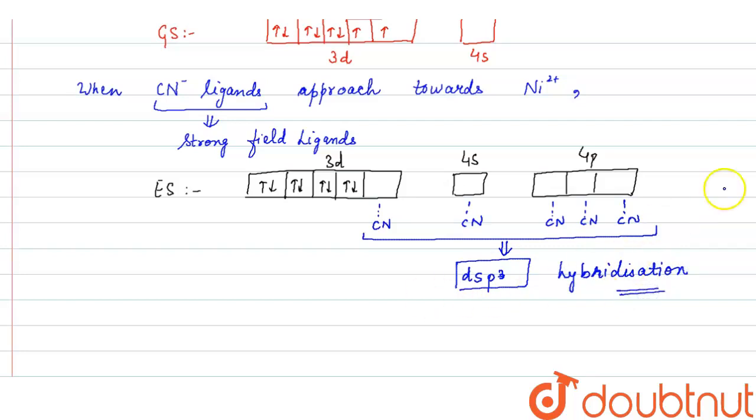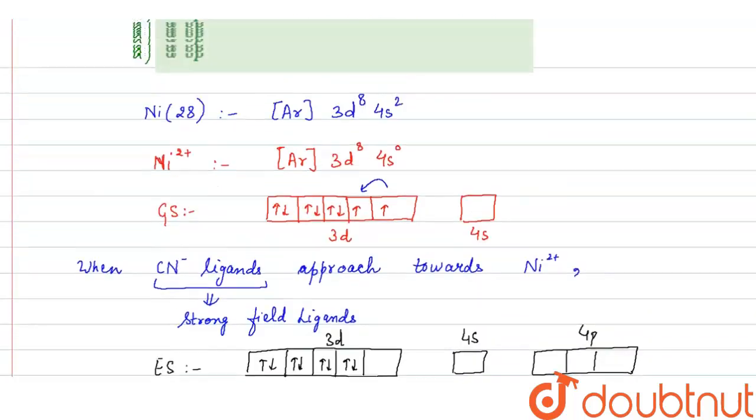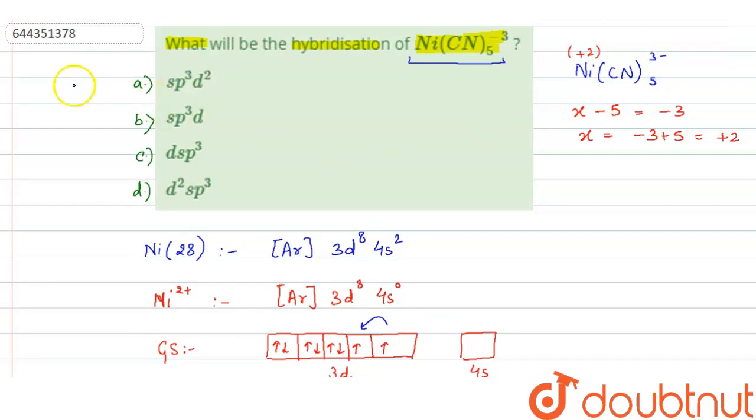So this is the answer. We have dsp3 hybridization in Ni(CN)5^3-. So here answer will be option C, dsp3. So option C is the answer.